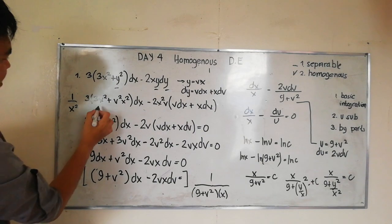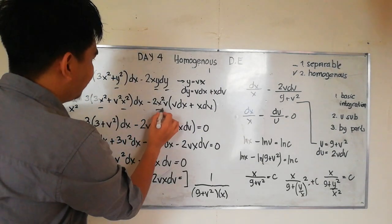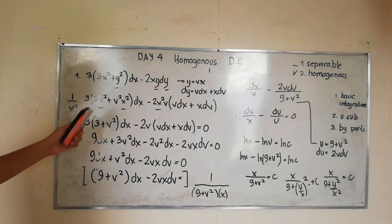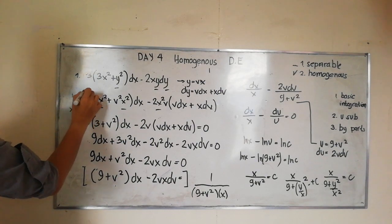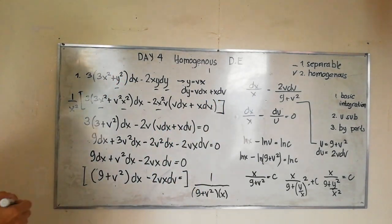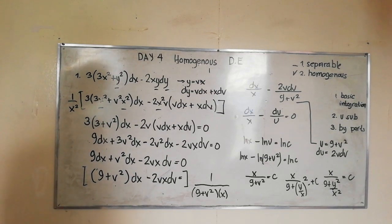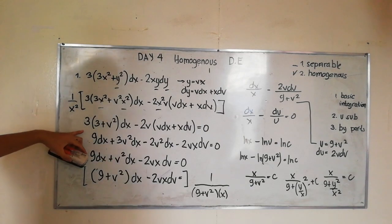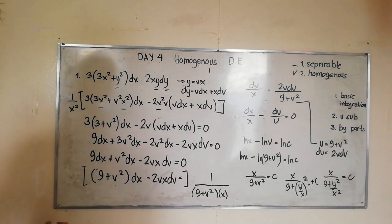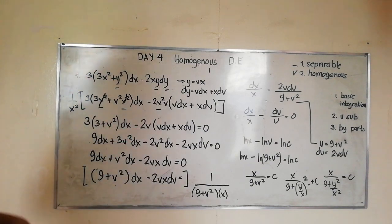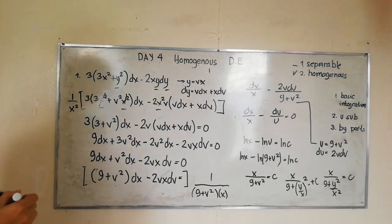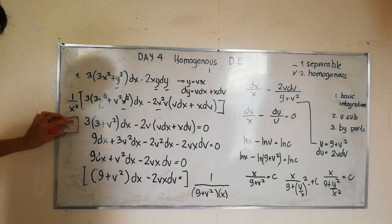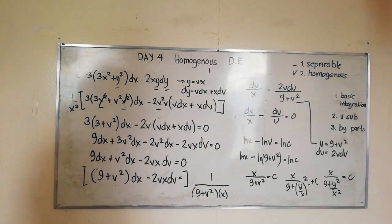As you can see, x² is common in each term, so we can cancel that out and simplify. Multiplying through by 1/x², the arriving equation becomes: 3(3 + v²)dx minus 2v(v dx + x dv).